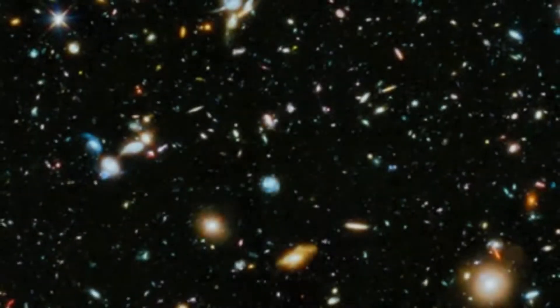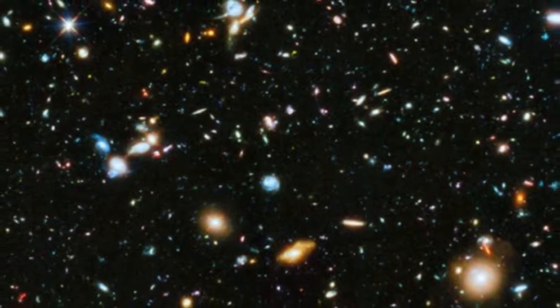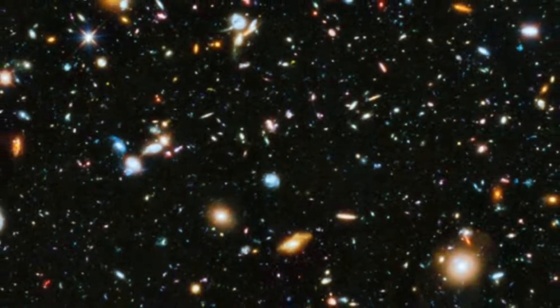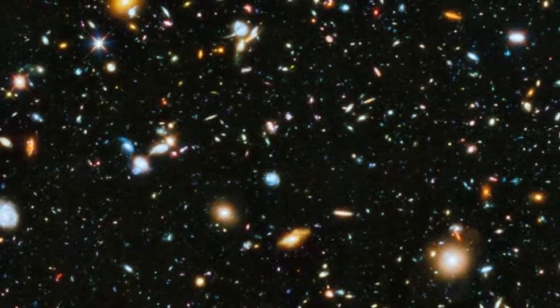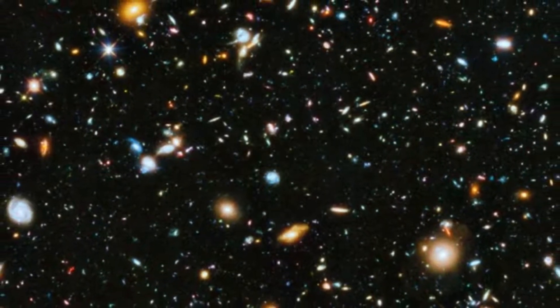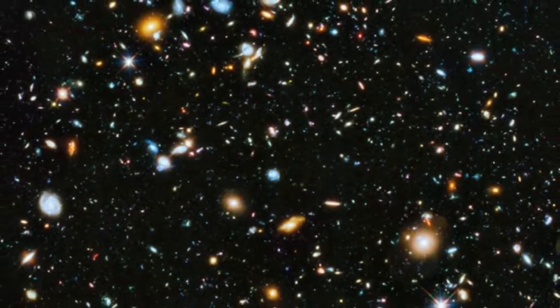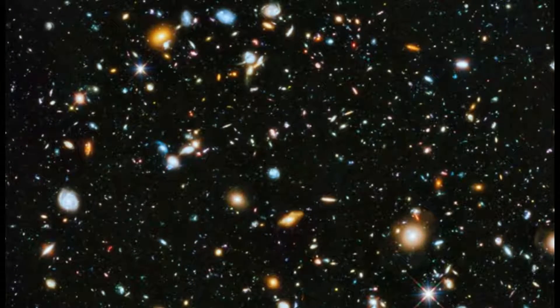Similarly, should space go on forever then every possible finite arrangement of matter occurs in an infinite number of locations. So should space be infinite, there are infinite copies of you, earth, and even exact atom for atom copies of our whole milky way galaxy.